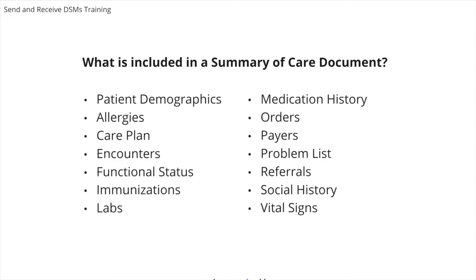By default, the summary of care contains patient demographics, allergies, care plans, encounters, functional status assessment, immunizations, labs, medication history, orders, payers, problem list, referrals, social history, and vital signs. The summary of care document can also contain confidential diagnoses and orders. However, this is not included in the document by default.